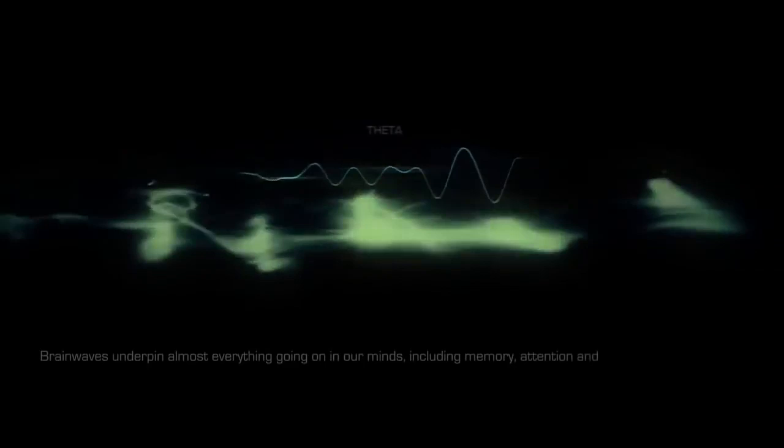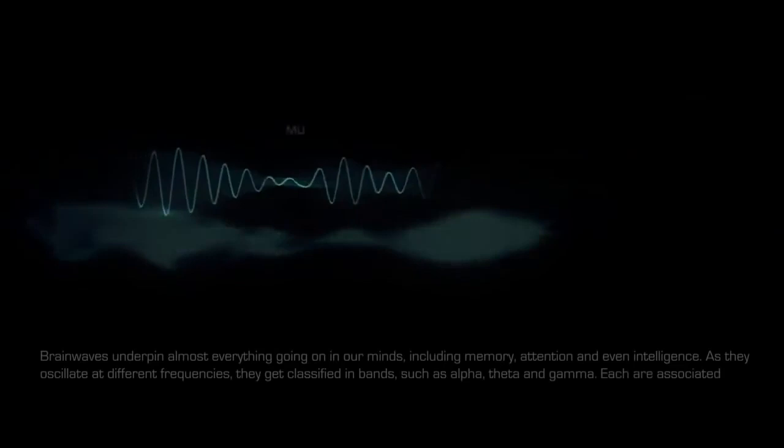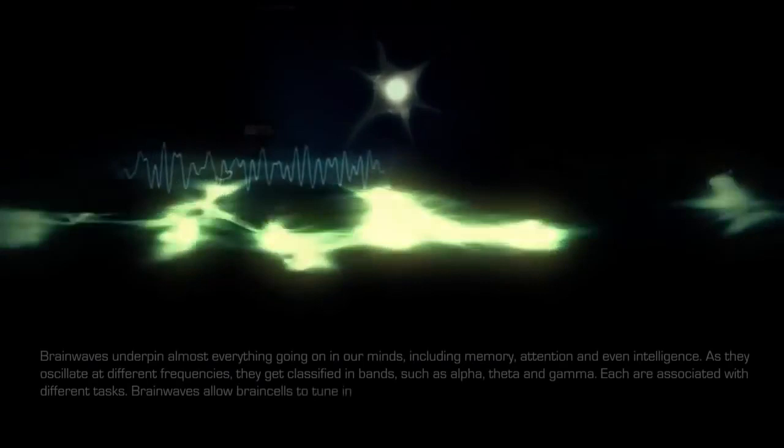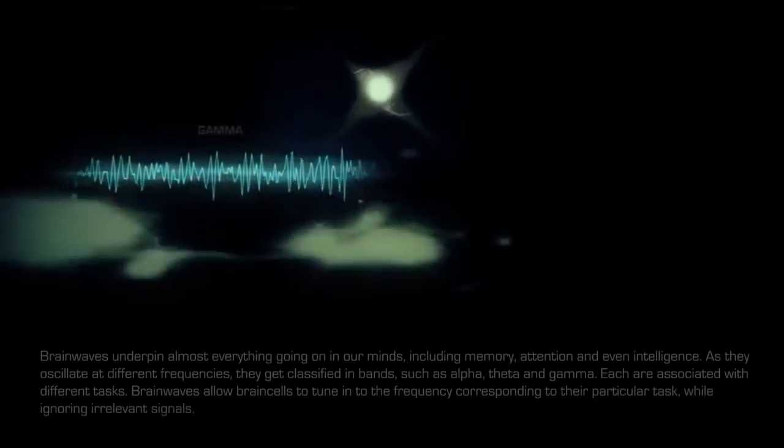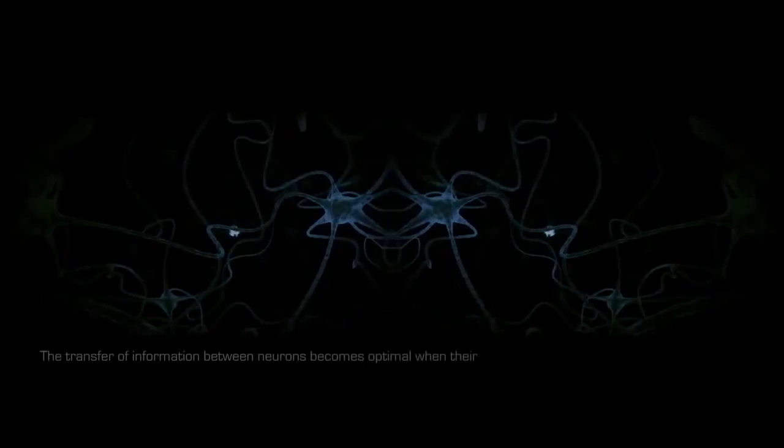Brain waves underpin almost everything going on in our minds, including memory, attention, and even intelligence. As they oscillate at different frequencies, they get classified in bands such as alpha, theta, and gamma. Each are associated with different tasks. Brain waves allow brain cells to tune into the frequency corresponding to their particular task while ignoring irrelevant signals, similar to how a radio homes in on different waves to pick up radio stations.